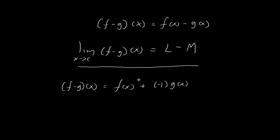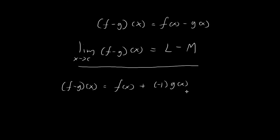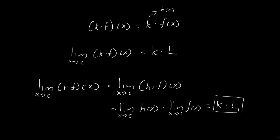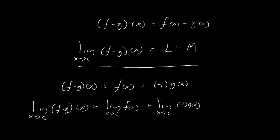Since it's the sum of two functions, we can use the sum law. And to evaluate the limit of the second part, negative 1 times g of x, we can use the constant multiple law we just established. So the limit as x tends towards c of f minus g of x equals the limit of f of x plus the limit of negative 1 times g of x. By definition the first limit is l, and by the constant multiple law the second is negative 1 times the limit of g of x, which equals m. So we get l plus negative 1 times m, which is l minus m. And so we have established the difference law.